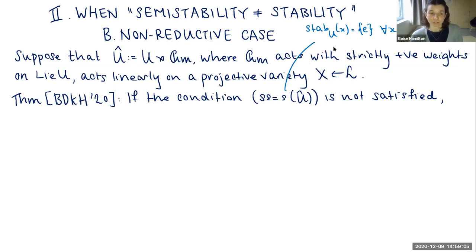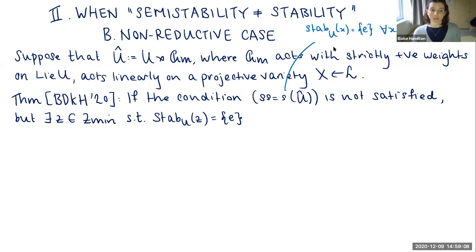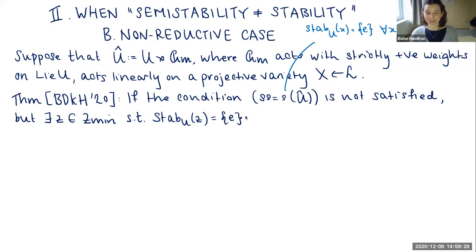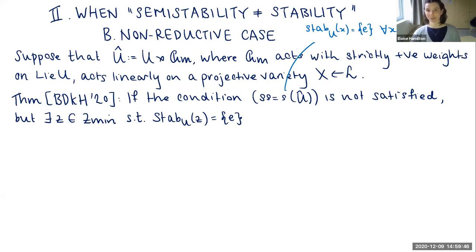If this condition isn't satisfied, we still make a weaker assumption: there exists at least some Z inside Z_min with trivial unipotent stabilizer. This is the analogue of the classical GIT condition that there exists at least one stable point. The existence of a stable point ensures we end up with a non-empty X̂: without it, after the blowup construction we might end up with an X̂ with no semi-stable points, making the quotient empty. The theorem says that given this assumption, there exists a sequence of blowups resulting in a projective variety X̂ with a linear action of Û such that semi-stability equals stability is satisfied, giving the nicest picture of non-reductive GIT.